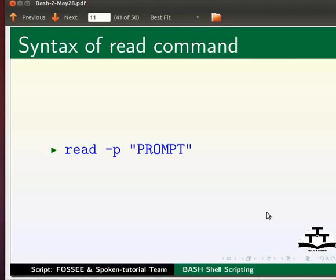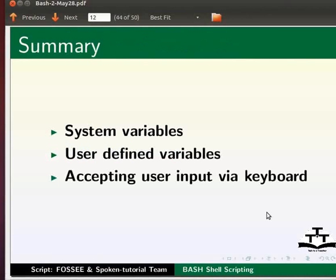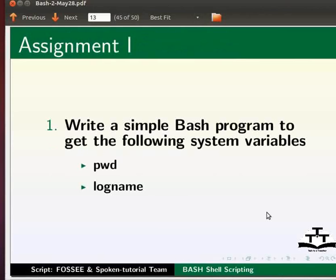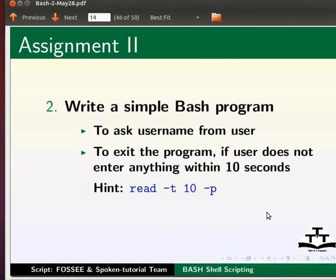Let us go back to our slides and summarize. In this tutorial we learnt about system variables, user defined variables, and accepting user input via keyboard. As an assignment, write a simple bash program to get the following system variables: PWD and LOGNAME. Also write a simple bash program to ask for a username from the user and exit the program if the user does not enter anything within 10 seconds. Hint: use read -t 10 -p.